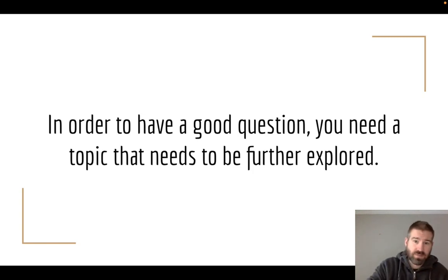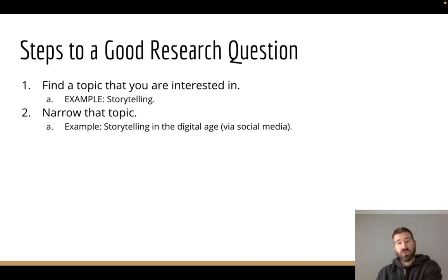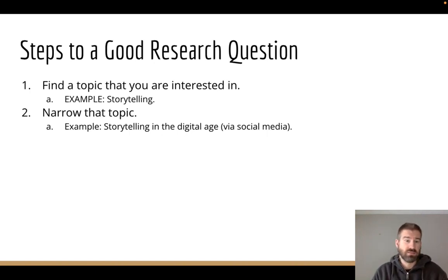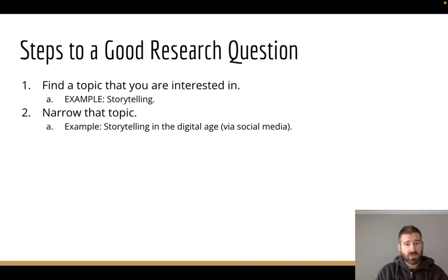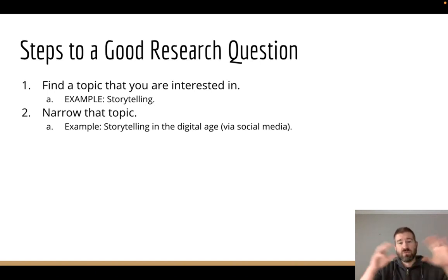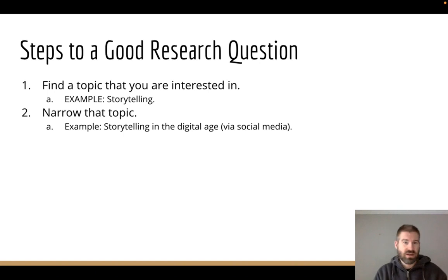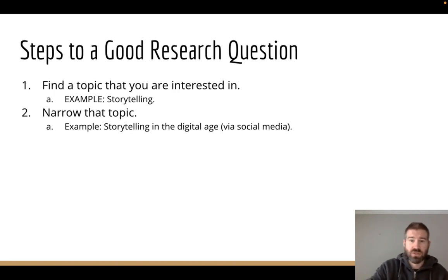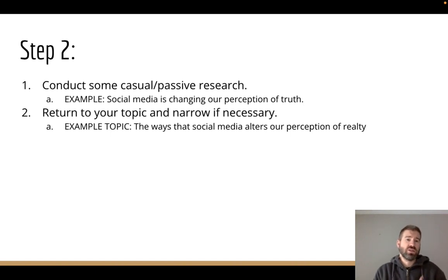In order to have a good question, you need a topic that does need to be further explored and hasn't been researched to death. Some steps to coming to a good research question: the very first place I'd suggest you start is to find a topic that you are interested in. For example: storytelling. I'm interested in storytelling, and then I can narrow that into a more manageable topic — like storytelling in the digital age, maybe especially via social media. So now I've moved from something super broad — storytelling has been around probably as long as the human species — to looking at it in the digital age via social media.